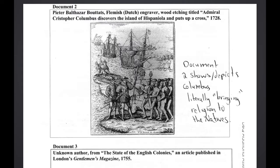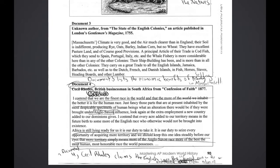Document 2 is an image of Christopher Columbus bringing a cross and encountering natives in the Caribbean for the first time. I didn't feel confident sourcing this document, so I intend just to cite it with a one-sentence summary. For Documents 3 and 4: I don't feel confident in Document 3 so I'll just summarize and cite it, but Document 4 I feel confident about and I conduct SOAP analysis. Cecil Rhodes is an incredibly fascinating character — the Rhodes Scholarship is named after him, which is an incredible achievement.